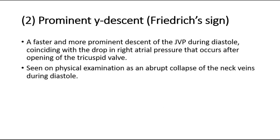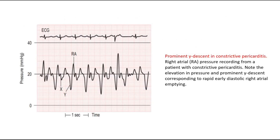Next we look at prominent Y-descent, the Friedrichs sign. This is a faster and more prominent descent of the JVP during diastole, coinciding with the drop in right atrial pressure that occurs after opening of the tricuspid valve. Prominent Y-descent is seen on physical examination as an abrupt collapse of the neck veins during diastole. This picture shows a prominent Y-descent in constrictive pericarditis, with elevation in pressure and prominent Y-descent corresponding to rapid early diastolic right atrial emptying.